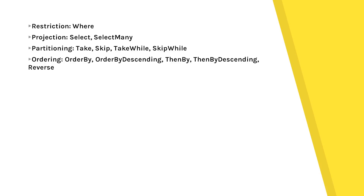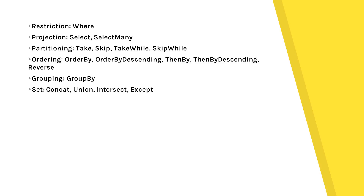Ordering operators are used when you want to get data in a sorted format. Grouping operators are used when you want data organized in groups. For example, if you have a table with departments like Sales and HR all mixed together, but you want them separated — HR in one group, Sales in another — you use the GroupBy query operators.